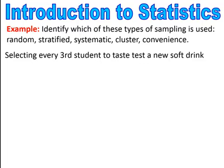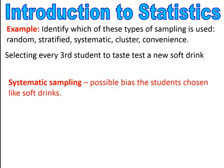This next one is selecting every third student to taste test a new soft drink. We're only going to select every third student — this is systematic sampling. A possible bias here could be that the students chosen all happen to like soft drinks.